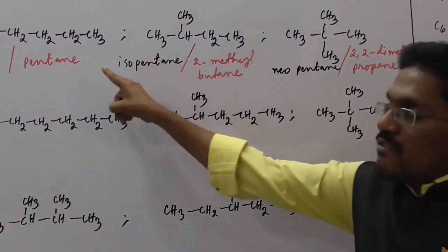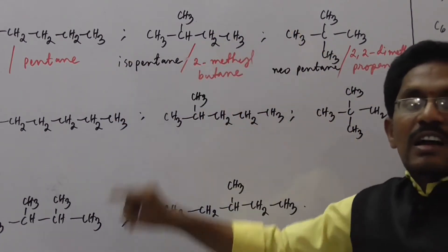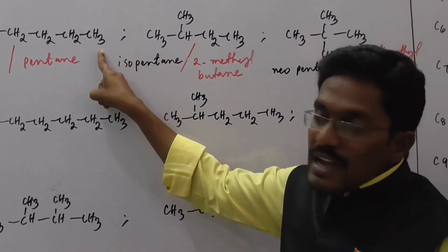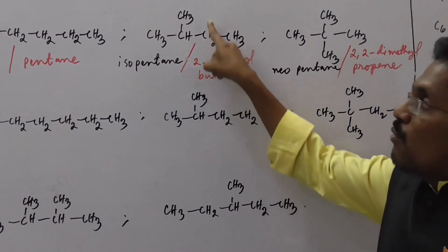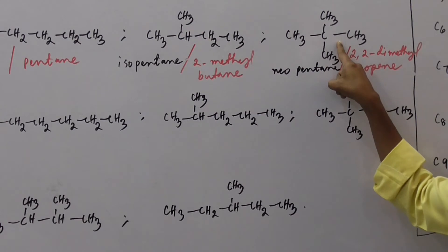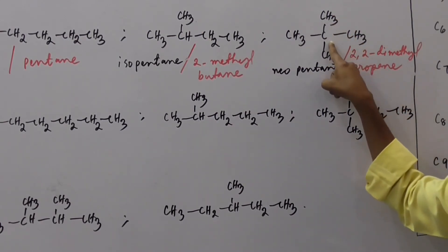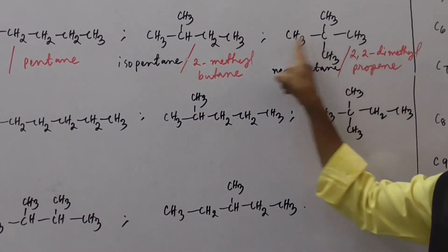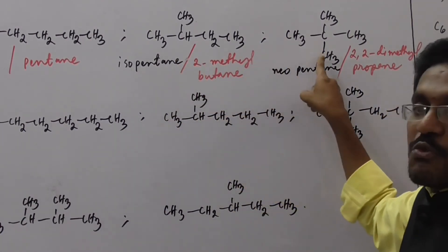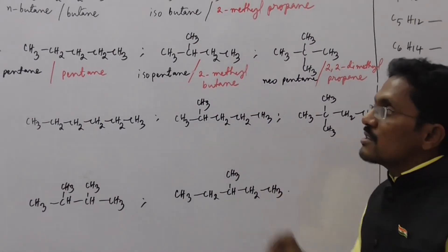So 3 molecules have the same number of carbons and the same number of hydrogens but are different in their chain. The first molecule does not contain any branch, the second has 1 methyl branch at the second carbon (iso), and the third has 2 methyl branches at the second carbon (neo). Molecules having the same molecular formula but showing a difference in their chain are known as chain isomers.